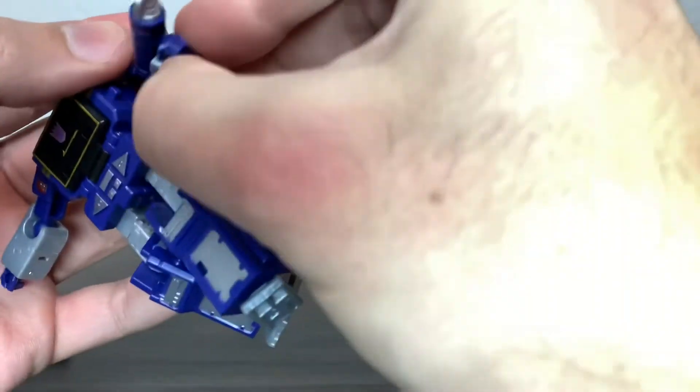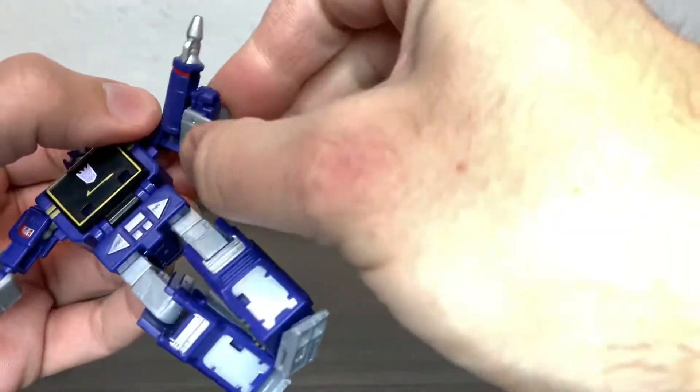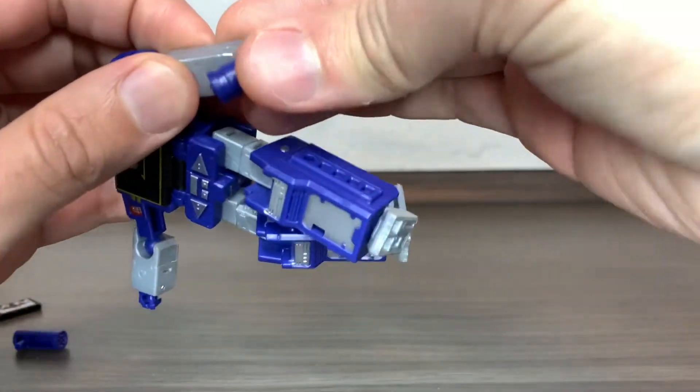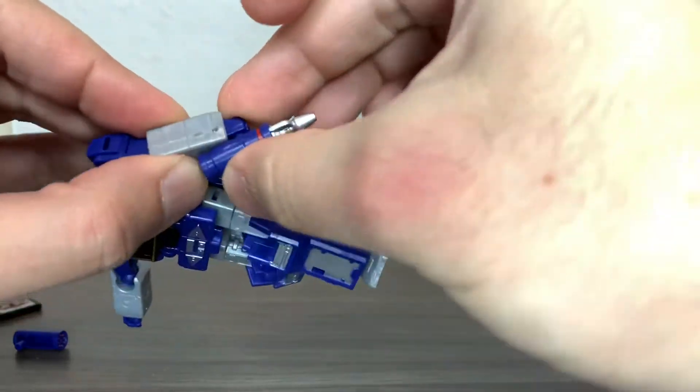No bicep swivel, but on the elbow he has a ball joint there. You can turn the arms all the way around, and the hands can just go up and down due to transformation.